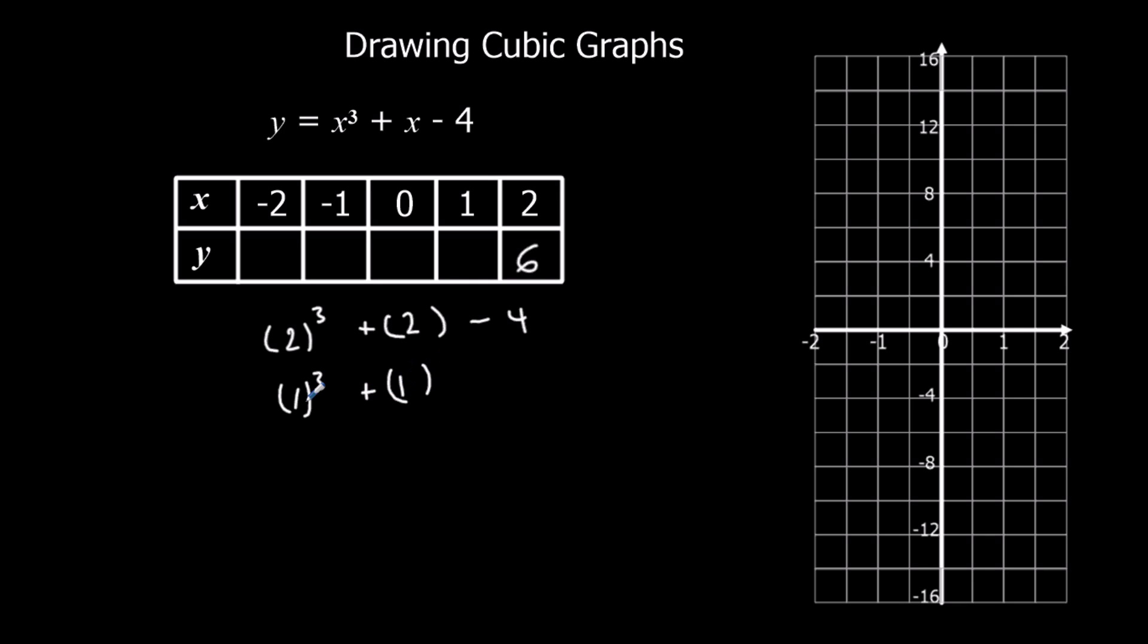1 cubed is 1, plus 1 is 2, minus 4 is minus 2. 0 cubed is 0, plus 0 is 0, minus 4, minus 4. Minus 1 cubed is minus 1, minus 1 is minus 2, minus 4 is minus 6. Minus 2 cubed is minus 8, minus 2 is minus 10, minus 4 is minus 14.